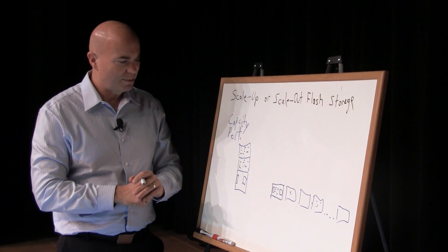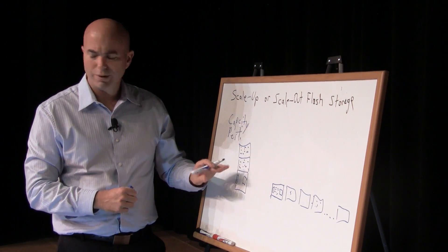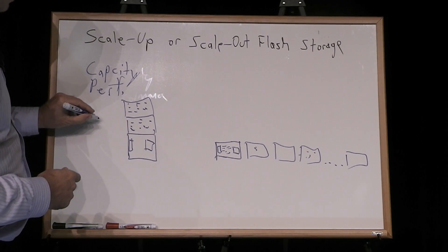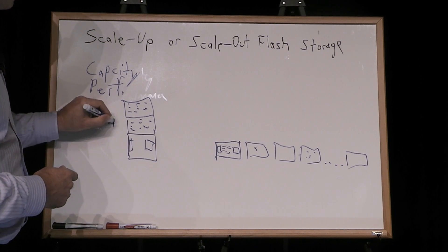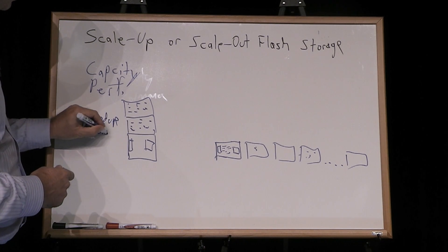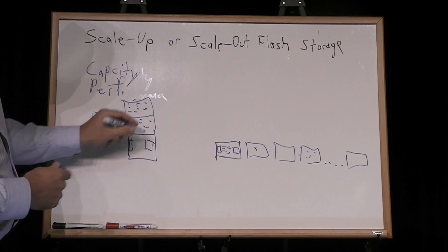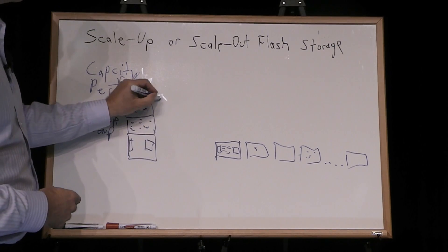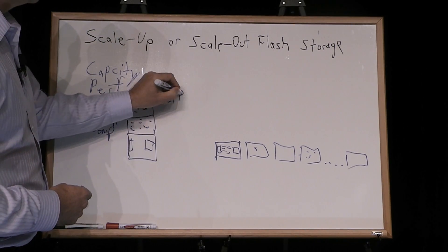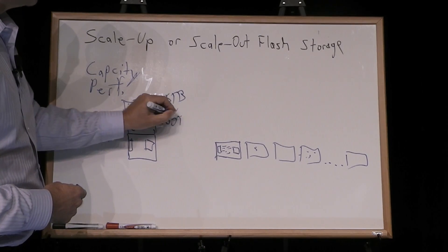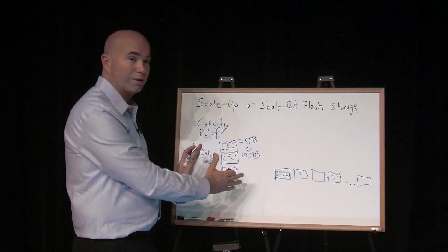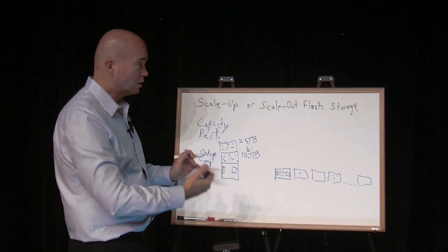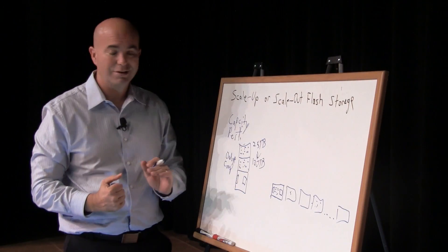The second problem is in capacity. In all-flash arrays, we generally have two things operating for us at any given time: dedupe and compression, plus the capacity. So a 25 terabyte system, for example, many times will act like 100 terabytes of capacity. So for many environments, that's all the capacity you're going to need.